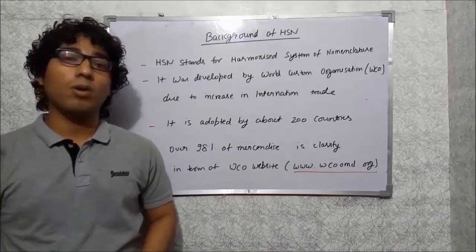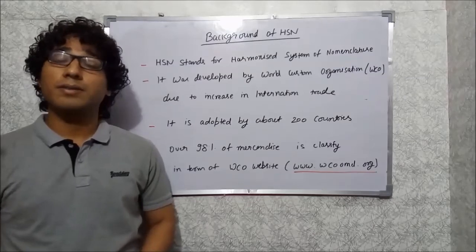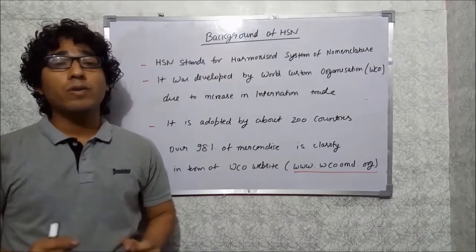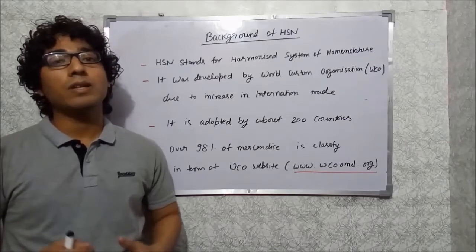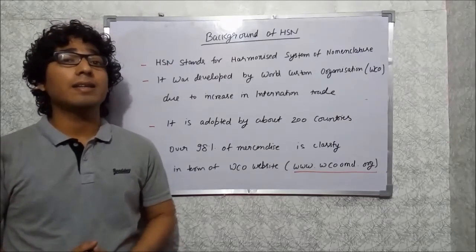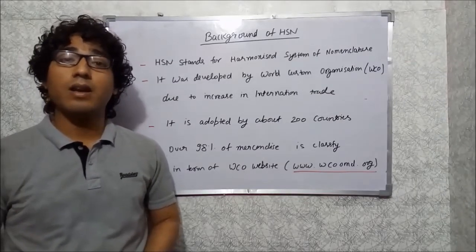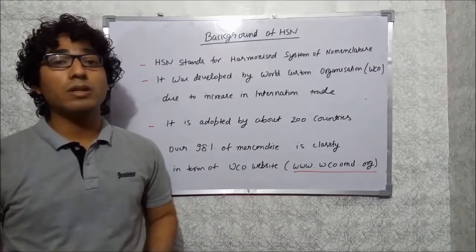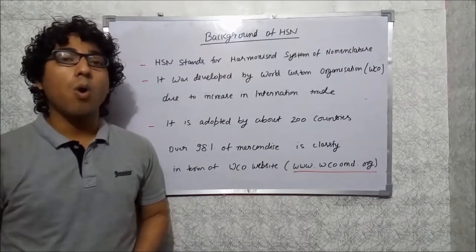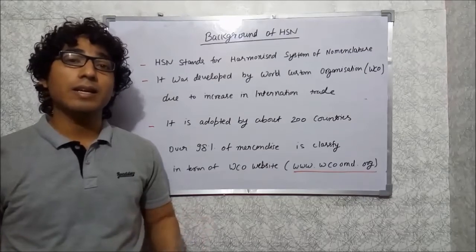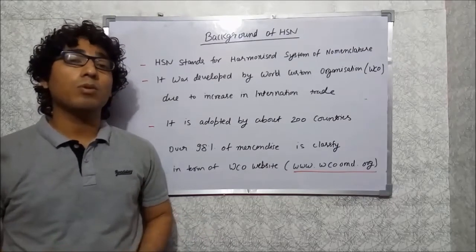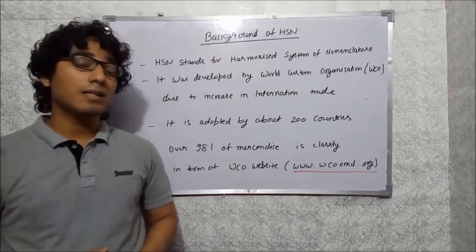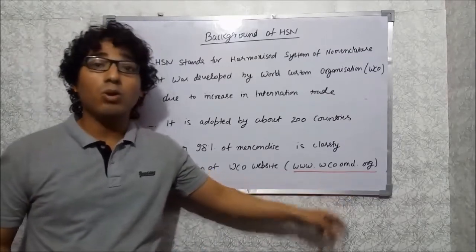HSN stands for Harmonized System of Nomenclature. It was developed by the World Customs Organization. As international trade increased, the need was felt to have a universal standard system of classification of goods to facilitate trade flow and the analysis of trade statistics. This is an international nomenclature standard adopted by about 200 countries, and almost 98% of merchandise in international trade is classified on the basis of it. The WCO website is www.wcoomd.org.